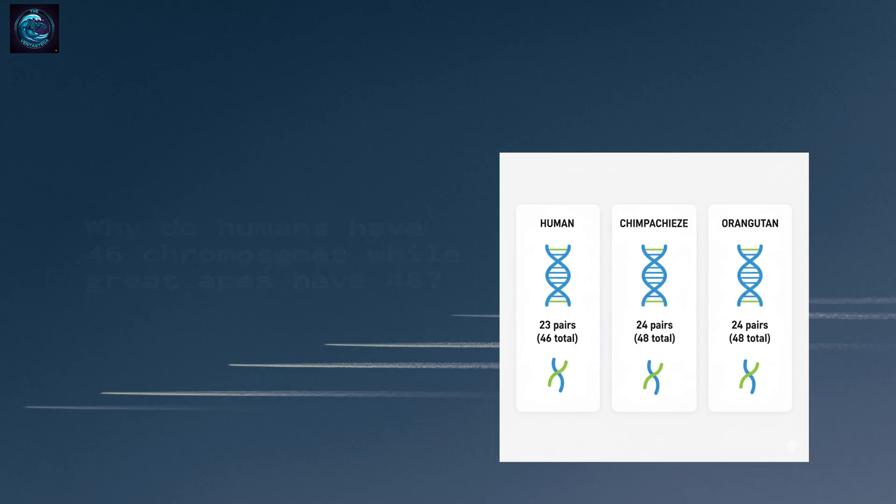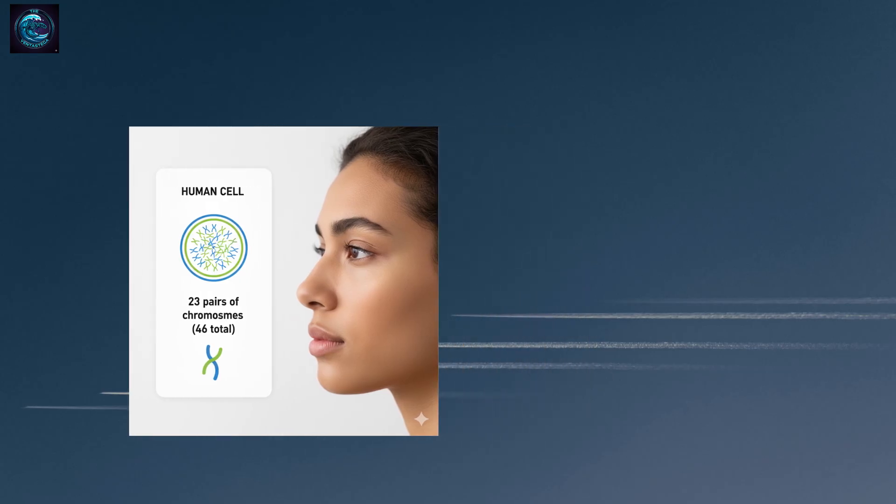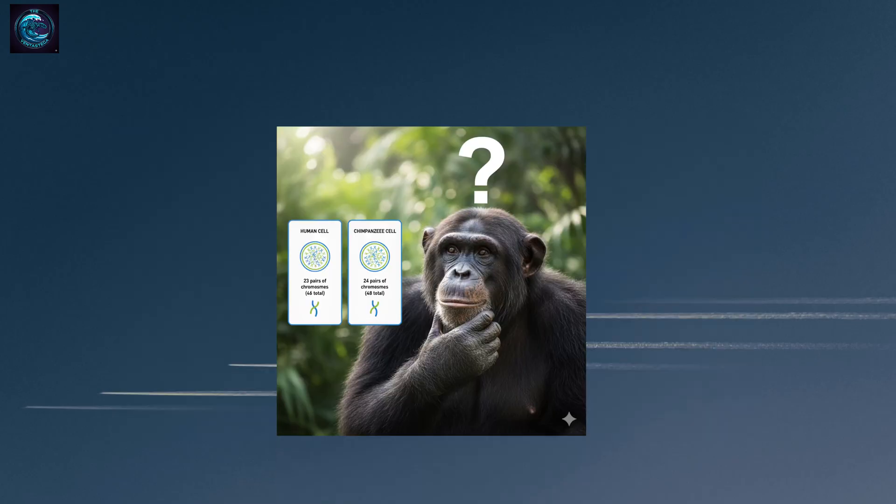Let's look at the numbers. Every human cell contains 23 pairs of chromosomes. That's 46 total. But when we look at chimpanzees, gorillas, and orangutans, they all have 24 pairs—48 chromosomes. This might seem like a problem for the theory of common descent. If we share a common ancestor with these apes, why would we have fewer chromosomes? Wouldn't evolution have added chromosomes, not removed them?